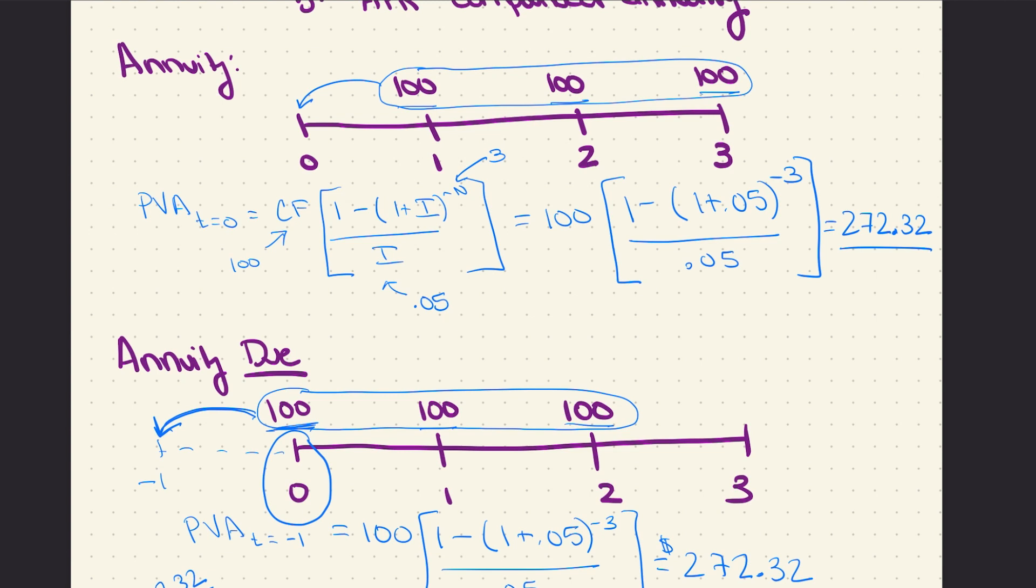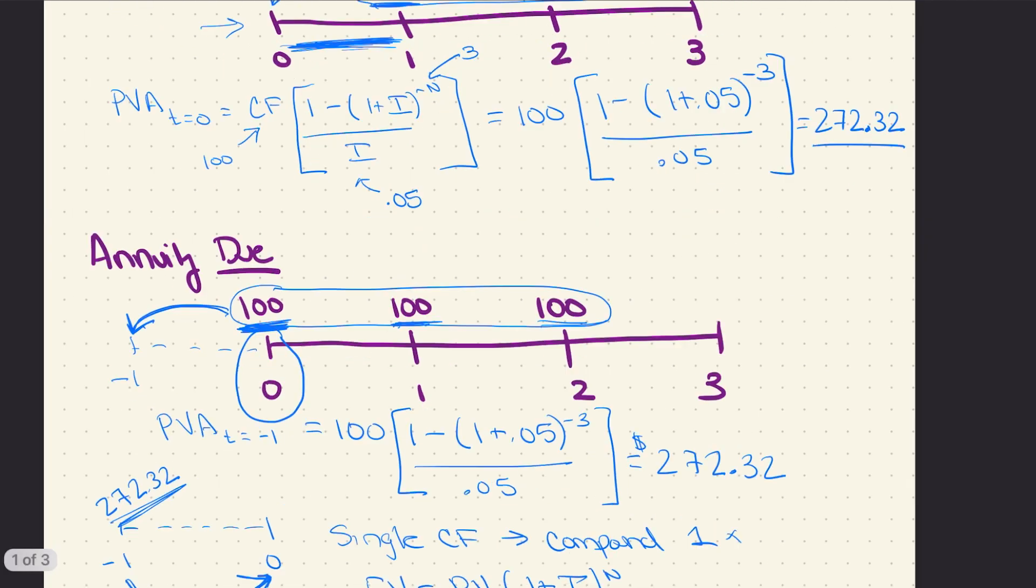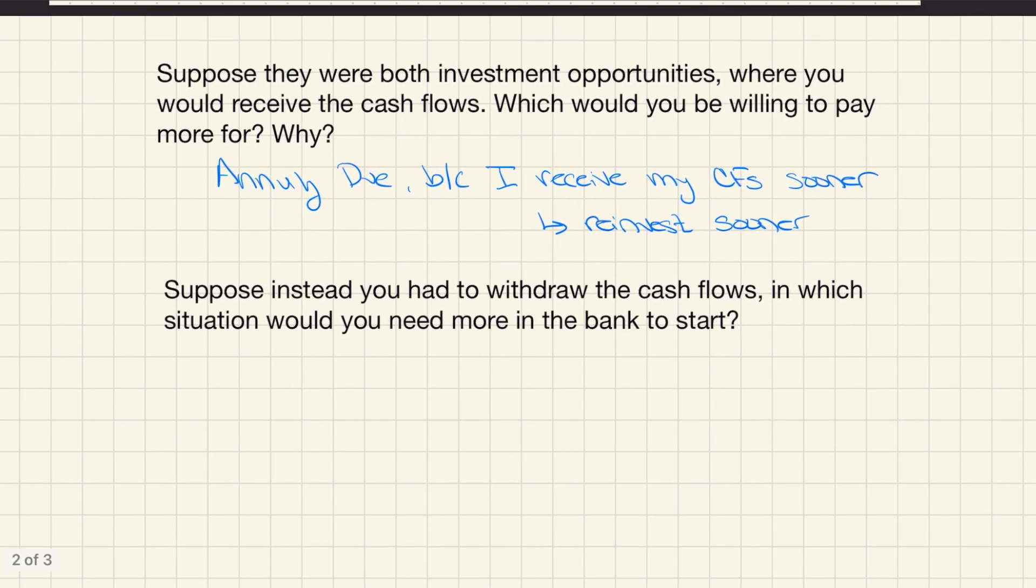The interpretation for this one is that you'd need more money in the bank if you had to pay your first $100 today because you never have the opportunity to earn interest on that money. It immediately gets taken out of your bank account. Then only what's left over gets reinvested for the first year. Then you take out another hundred, then the next year take out another hundred. Whereas up here on the first timeline you wouldn't need to have as much invested today because all of your money is able to earn interest for that whole first year. Then you make your first withdrawal. So again, if I were to answer this one, you need more in the bank for the annuity due because you withdraw the first cash flow immediately, so that cash flow never earns interest.